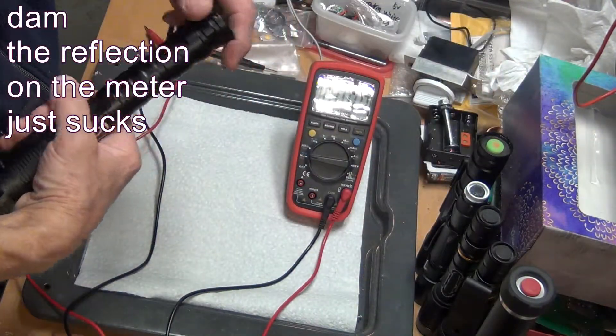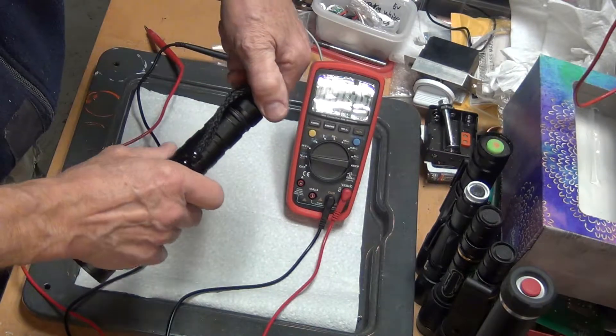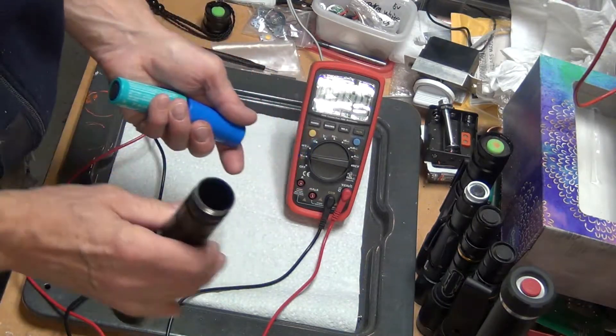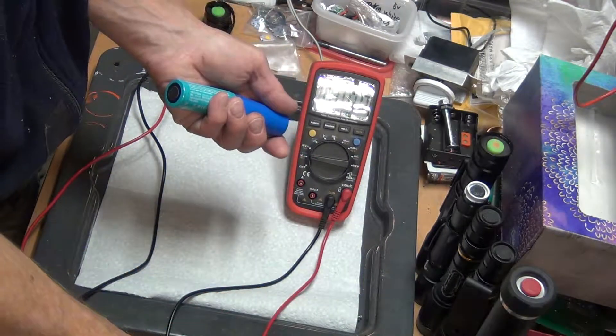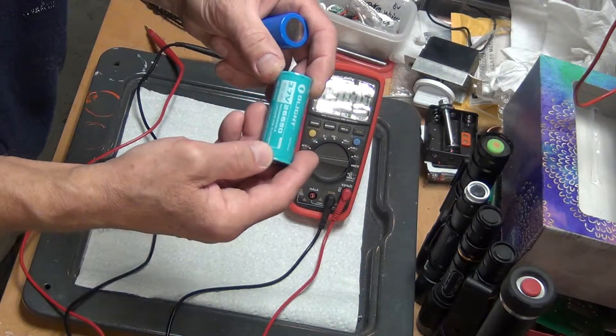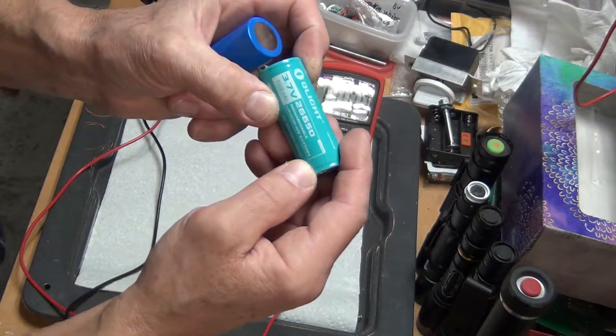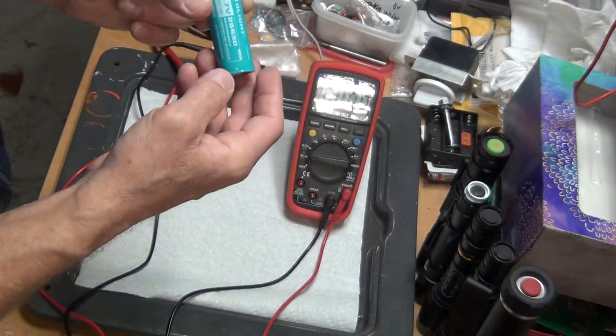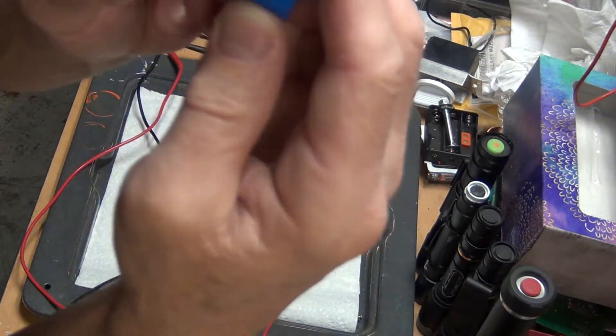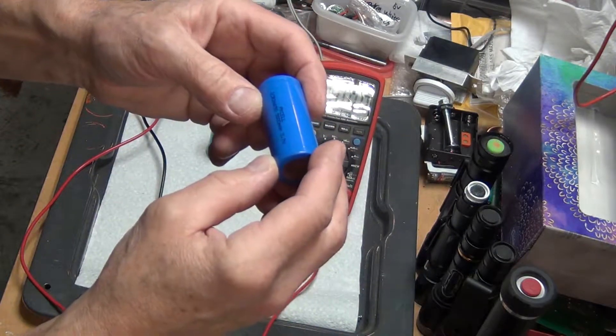Let's take this one and see what's inside. Alright, PKcell. Okay, so what we have here is an Olight 26650, 4500 mAh battery, and this one is a PKcell 5000 mAh battery.